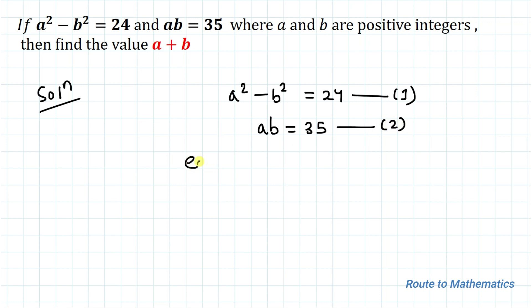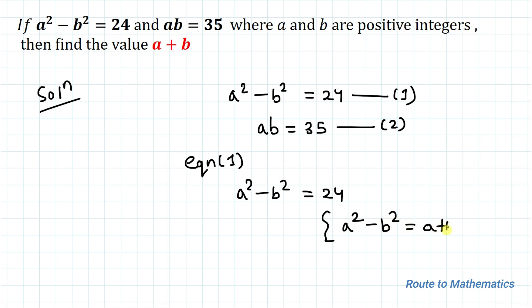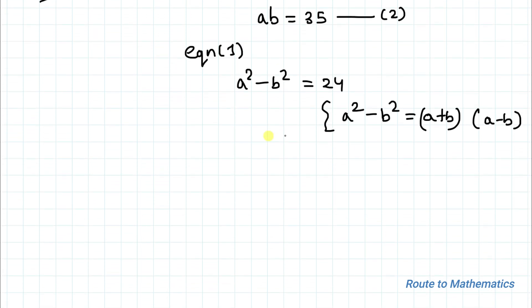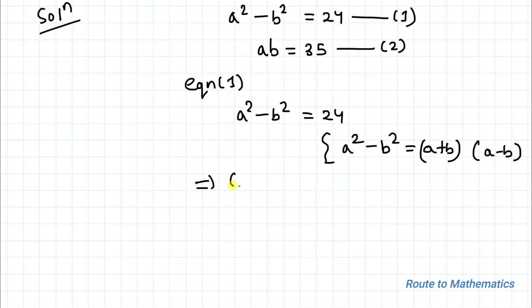From equation 1, we have a² minus b² equals 24. We know the algebraic identity: a² minus b² equals (a+b)(a−b). Applying this identity, we have (a+b)(a−b) equals 24.